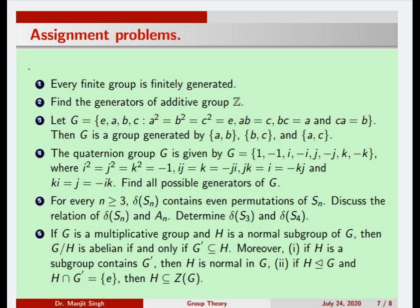Students are encouraged to find generators of the quaternion group and its derived subgroup. Problem 5 concerns the derived subgroup of Sₙ: since it contains even permutations and Aₙ also contains all even permutations, there will be some relation between them. Problem 6 is a direct consequence of properties of derived subgroups. I hope students have enjoyed learning about the subgroup generated by a subset and the commutator subgroup. Thank you for listening.